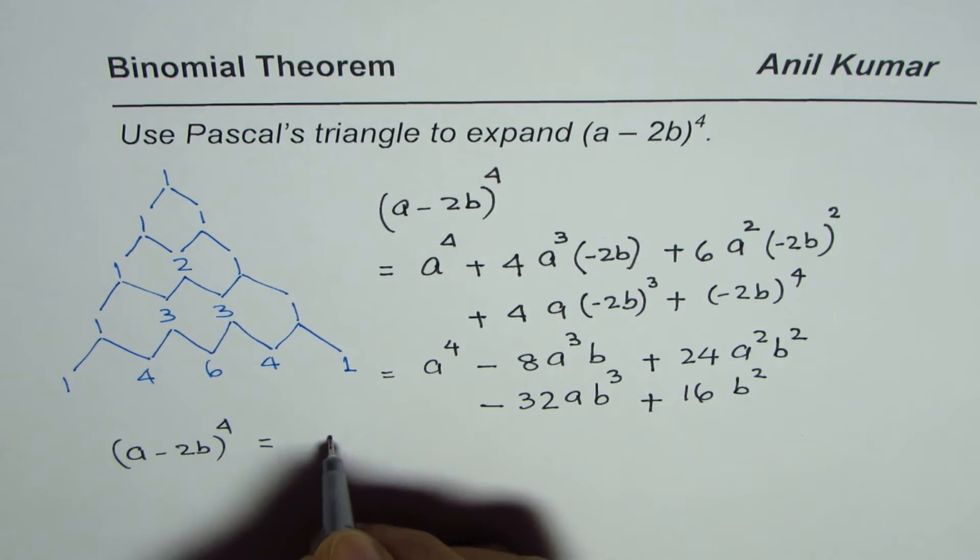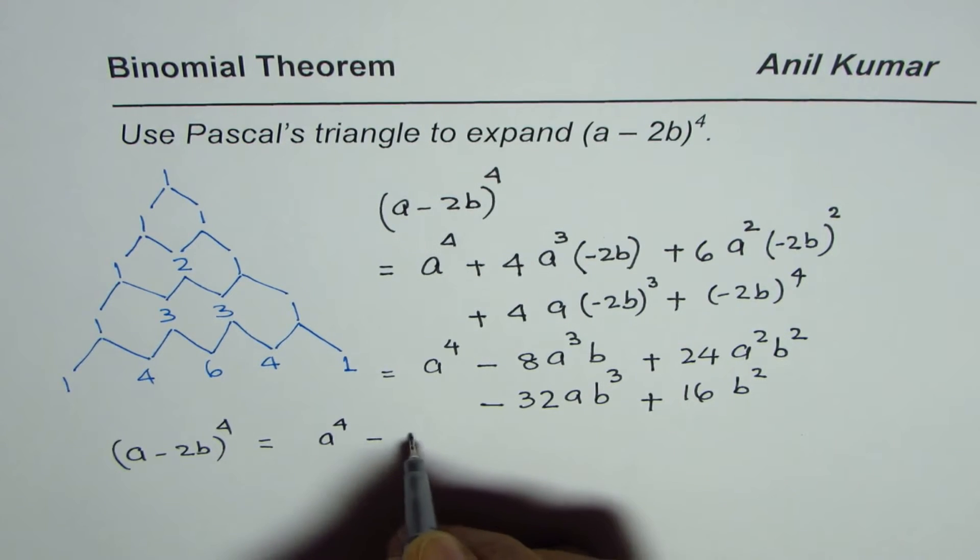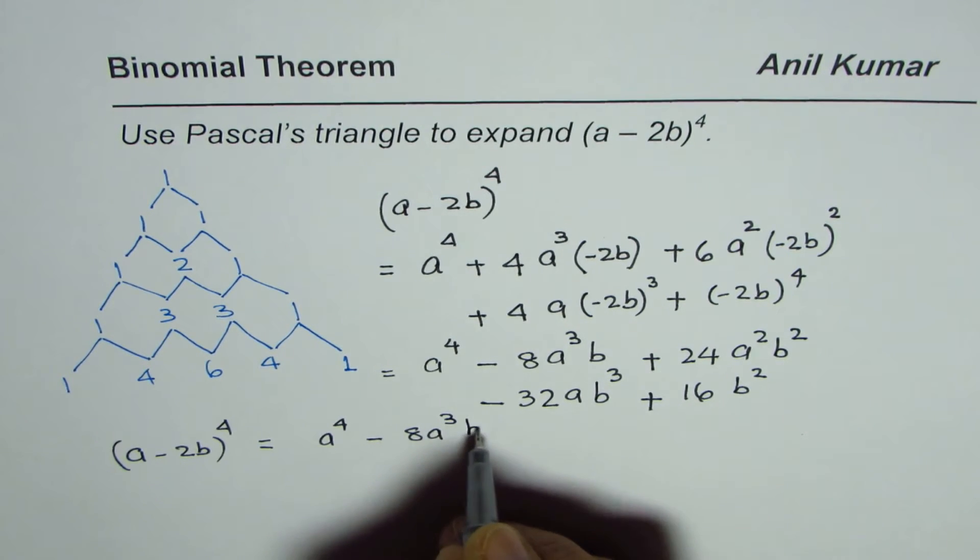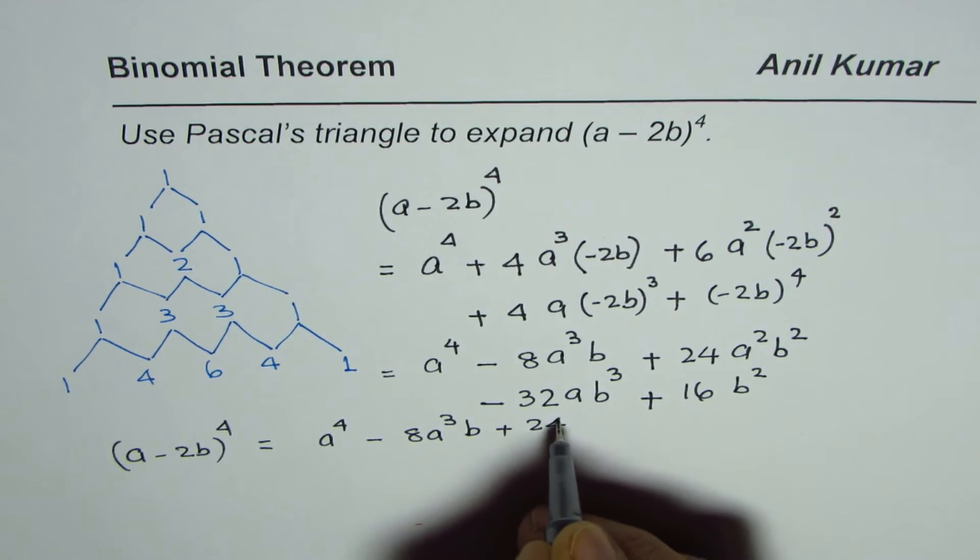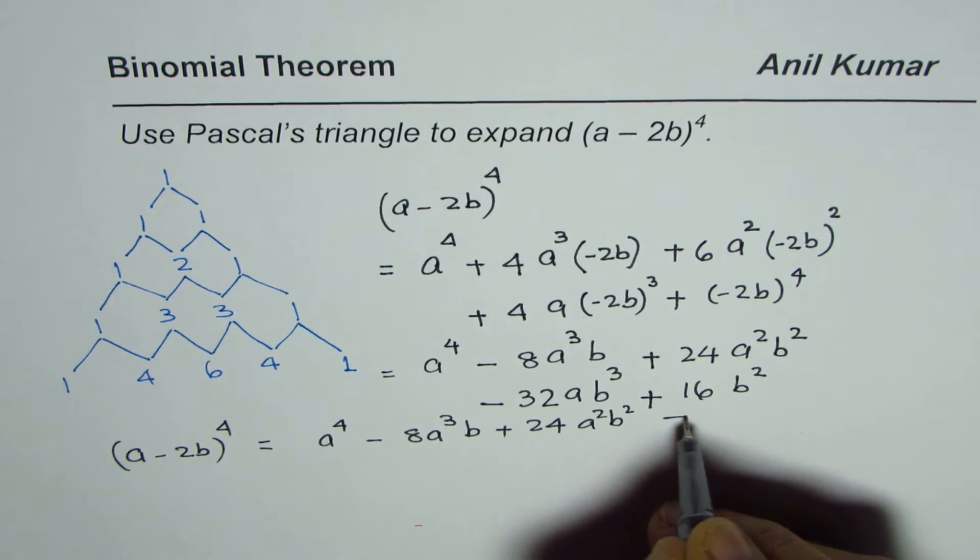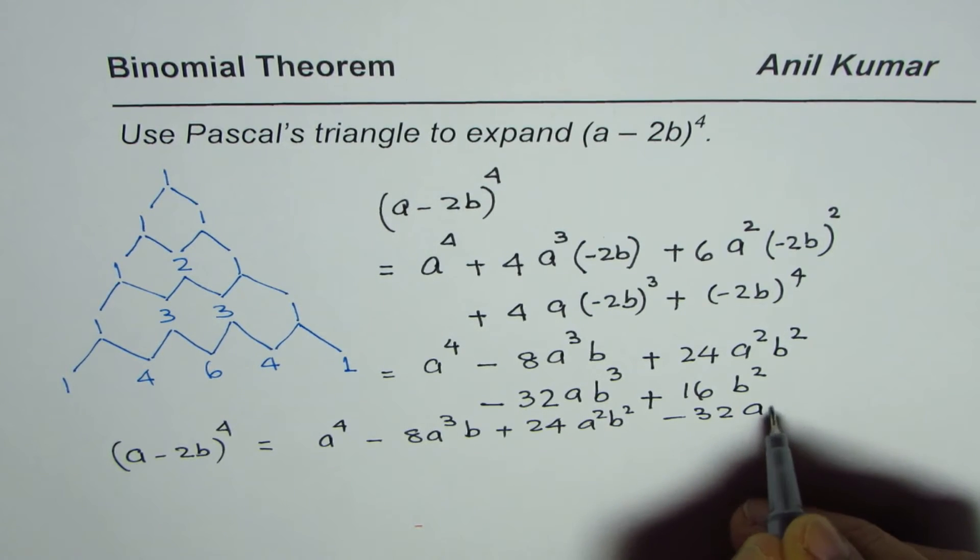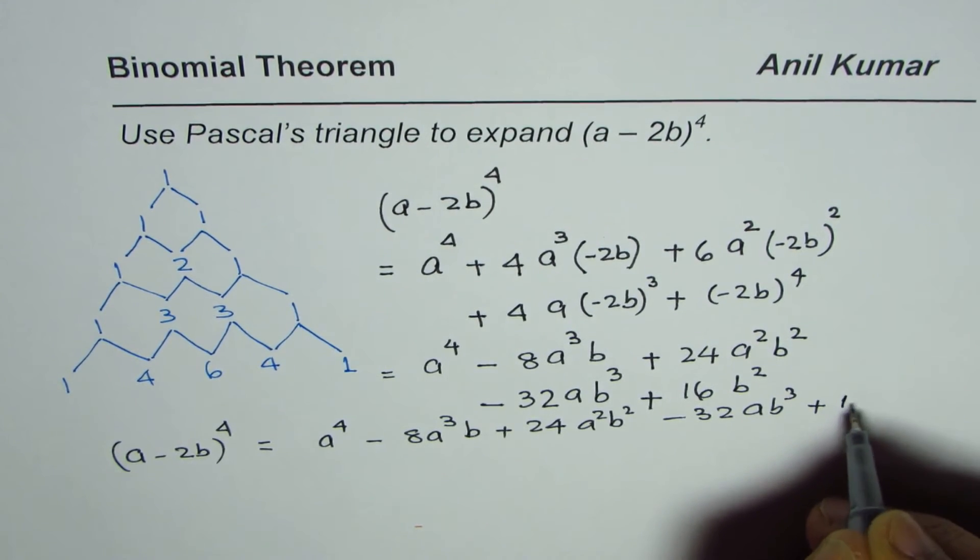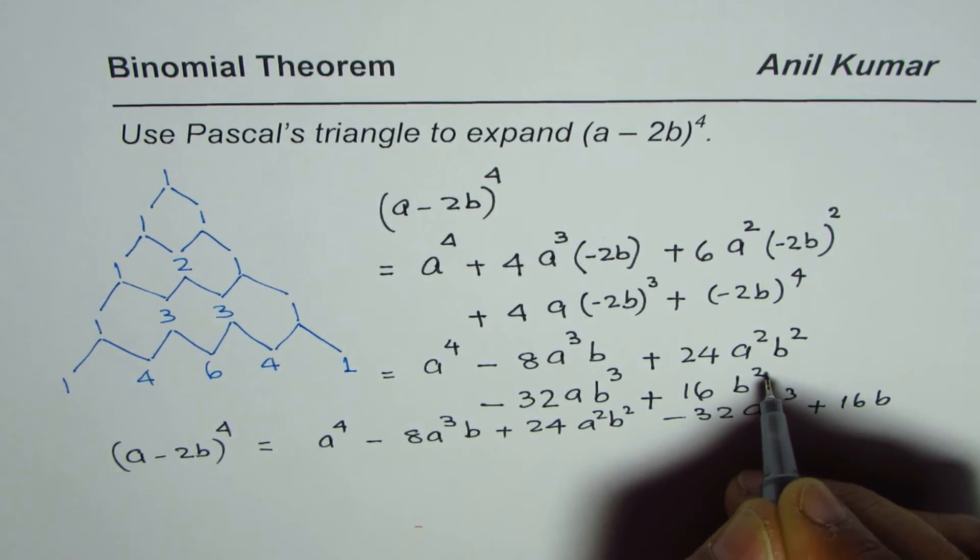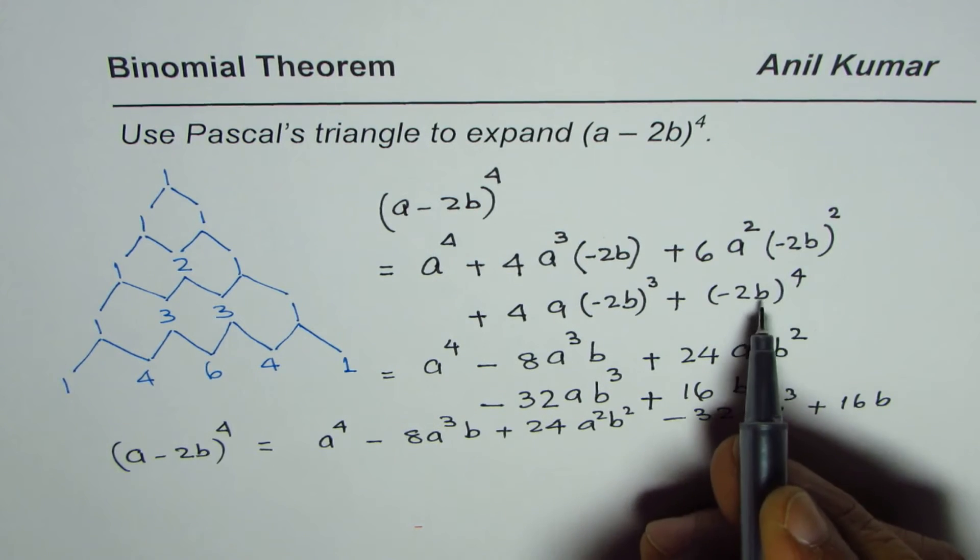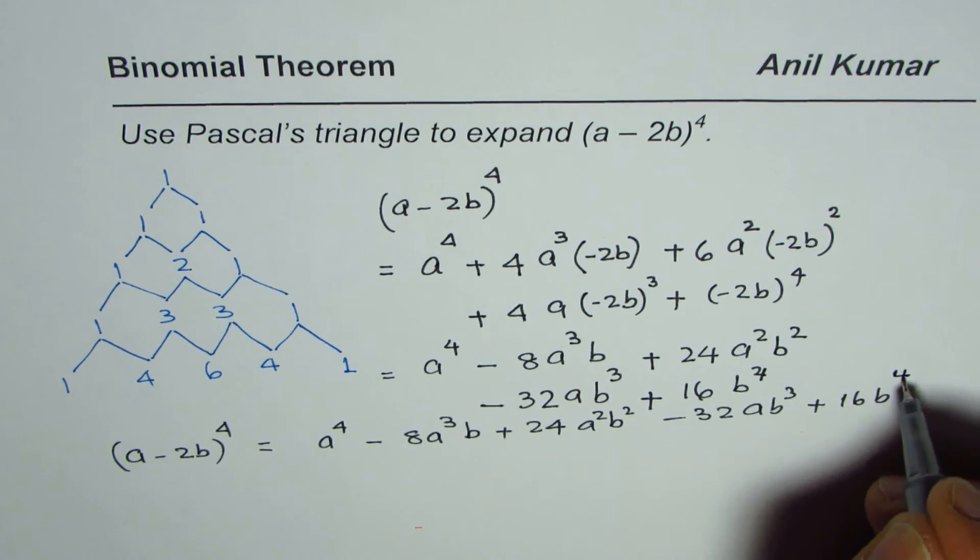as equal to a^4 - 8a^3b + 24a^2b^2 - 32ab^3 + 16b^4.